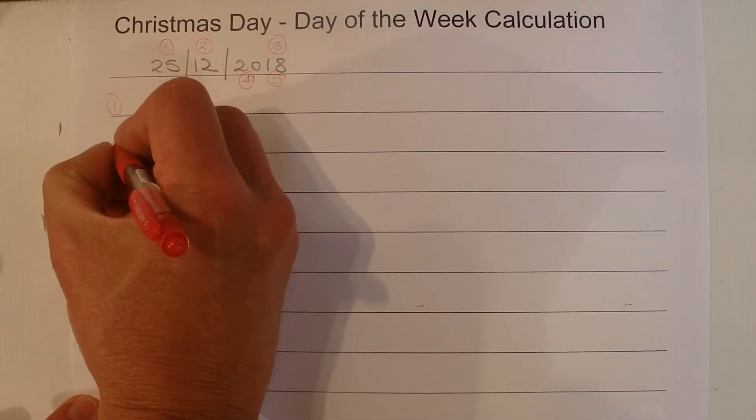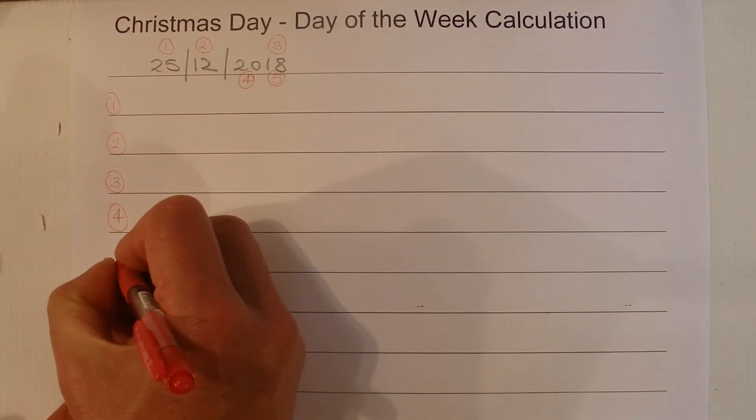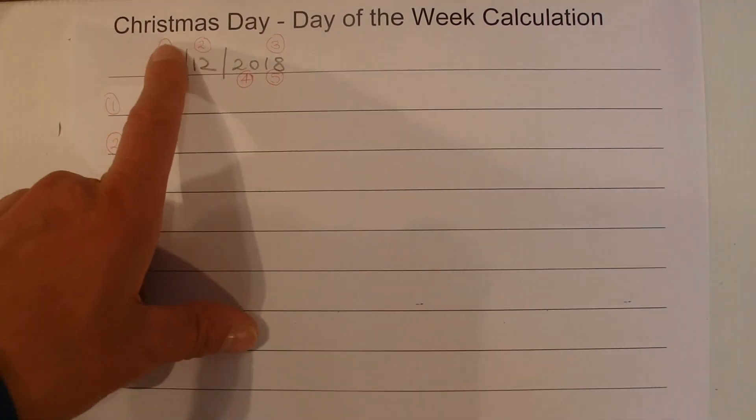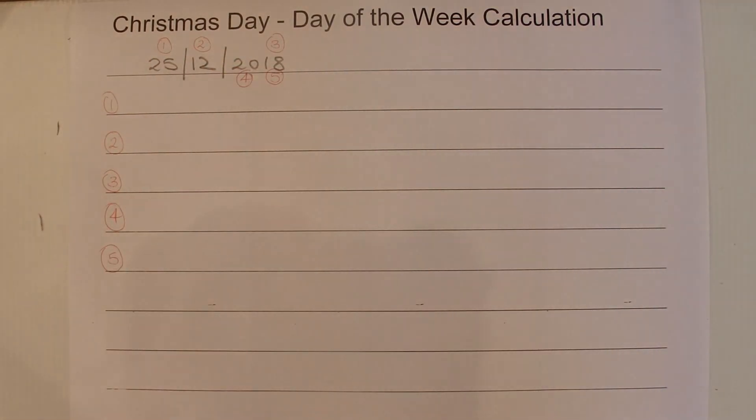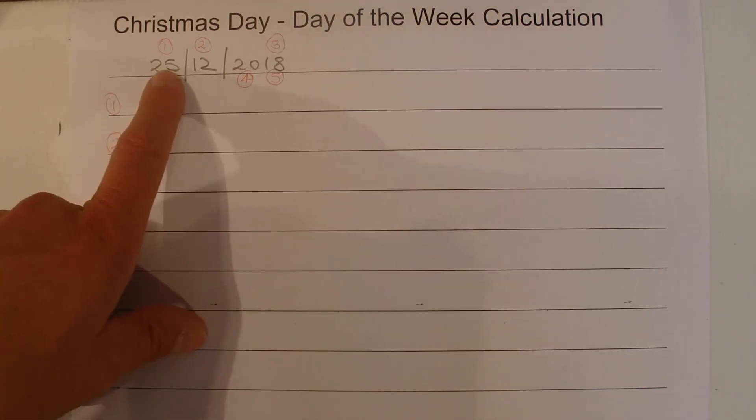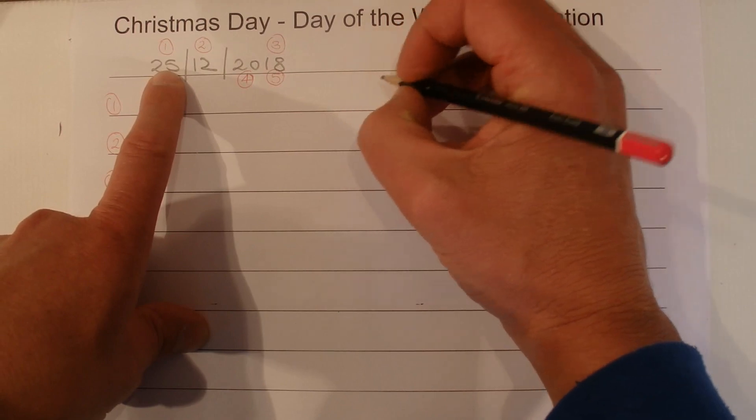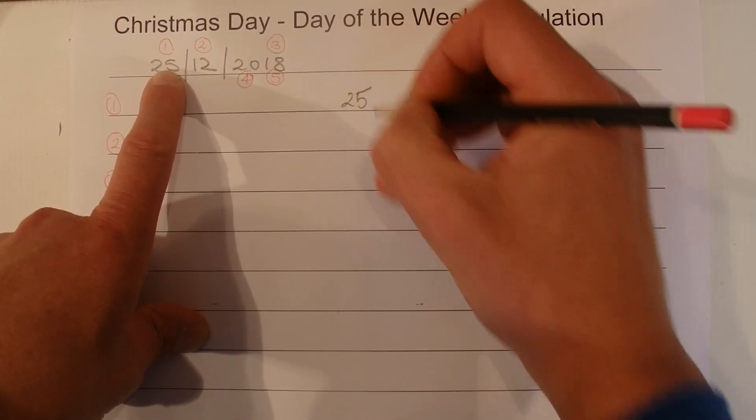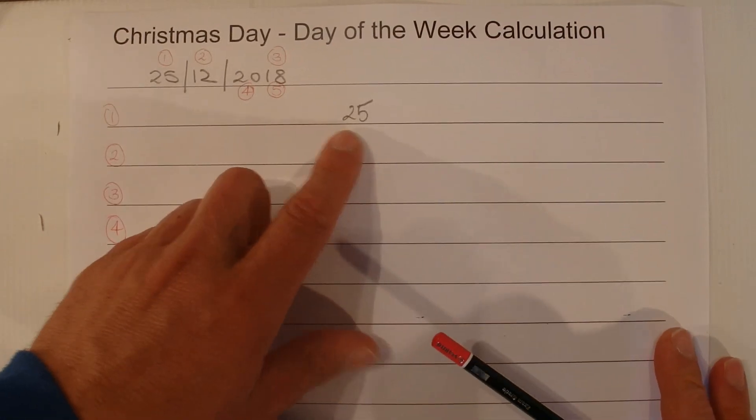So okay, I'll write down the steps there, so there's 1, 2, 3, 4, and 5 steps, and that's all based on those parts of the date. Okay, the first three steps are pretty easy, so you pick up the 25 and we're going to add up these five numbers. So I'll put that over there on the right hand side.